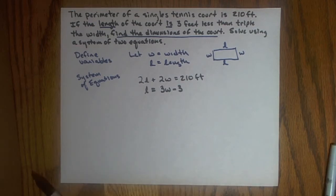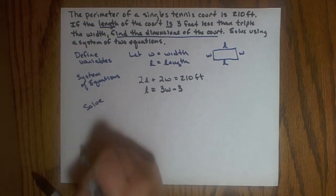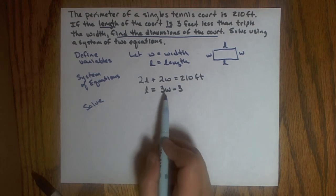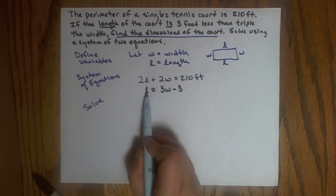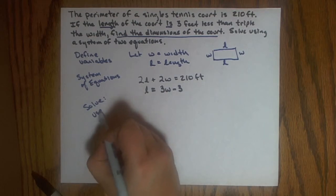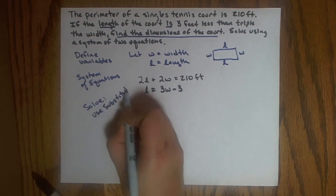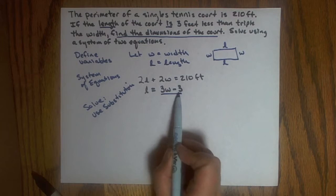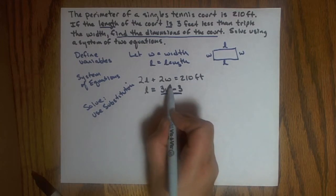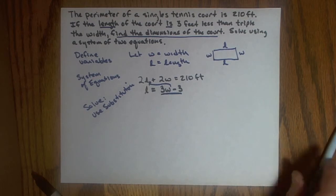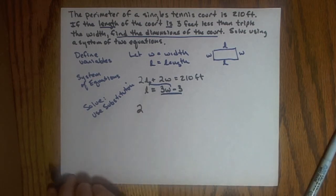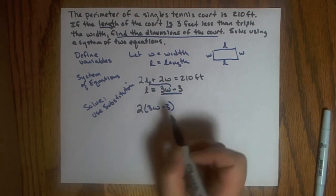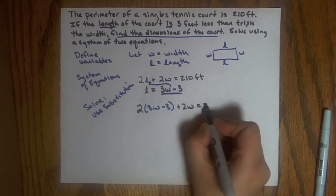So now I have to decide how to solve my system. I have two equations, so now I'm going to solve, and I can choose either to use the substitution method or the addition method. In this case, it's set up for substitution pretty easily because I already have one variable isolated. So I think I'm going to use substitution here. And in doing that, I'll take the expression I have for L, three W minus three, and I will substitute that in for L into the other equation. So I'll have two times the length, and in for length, I'm going to put three W minus three, plus two times the width equals that 210 feet.